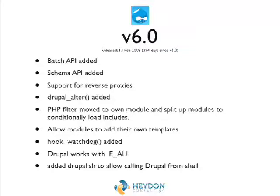Another thing that came in Drupal 6 was the ability to run Drupal from a shell. It was very basic and was more designed so we could run cron from a shell instead of through the web browser, which was a lot better. This is also sort of where utilities like Drush came from — once we'd gotten over this initial step of bootstrapping Drupal from the command line, we then started getting Drush, and everyone should be using Drush.